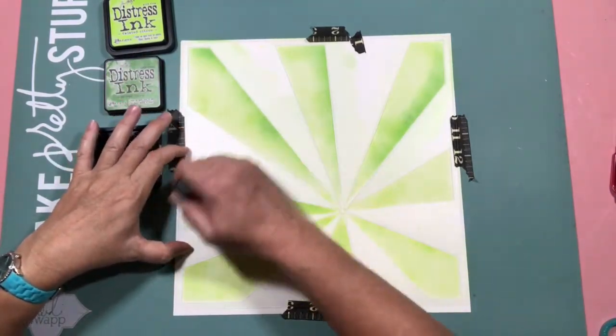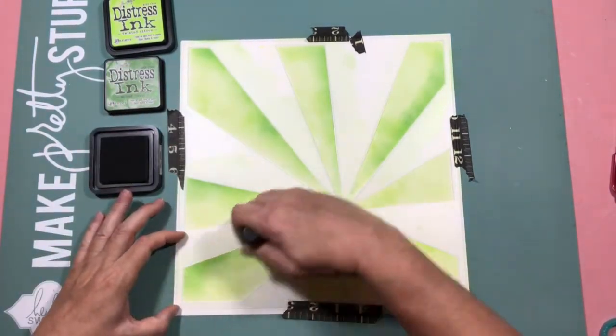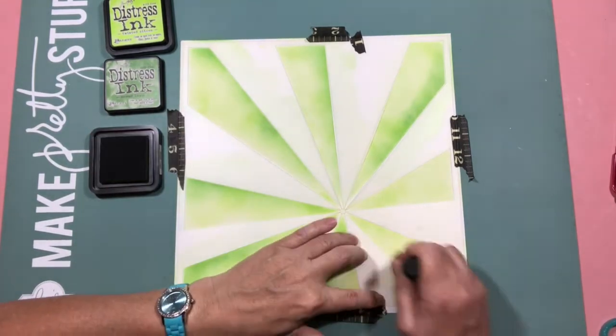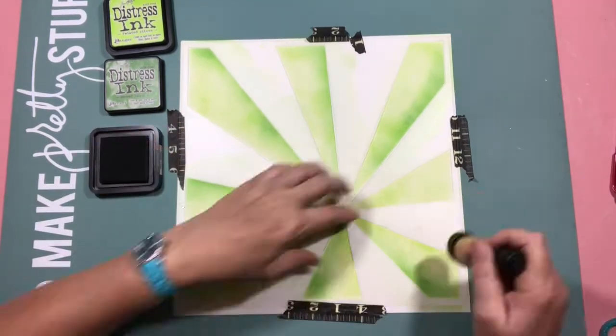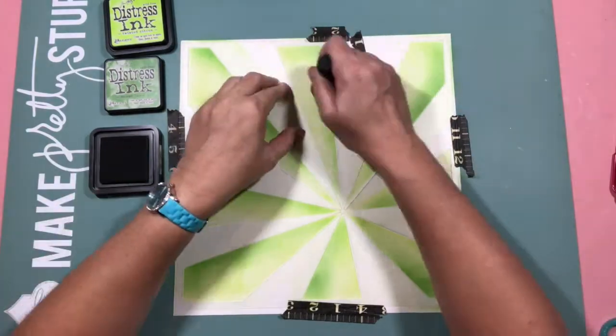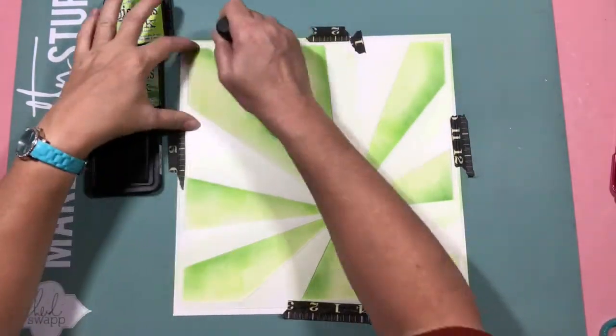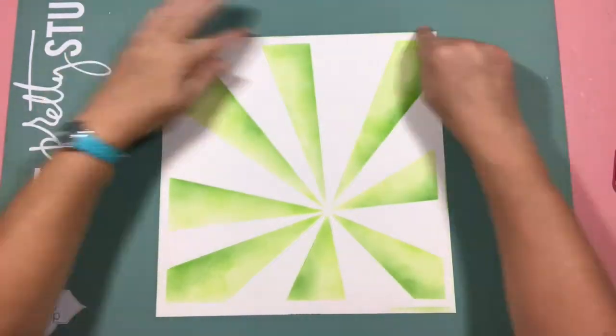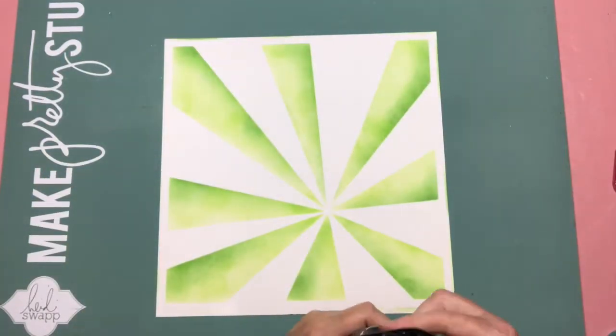I got out some distress ink and just colored away. I started with twisted citron, did a quick layer of that, and then went over with some mowed lawn to give a bit of emphasis to the right hand side of each ray.